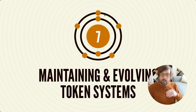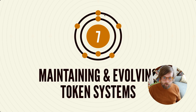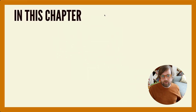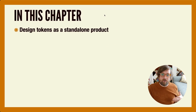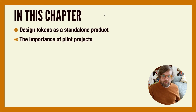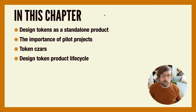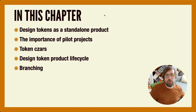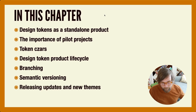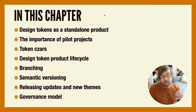Chapter seven is about maintaining and evolving token systems — really the human stuff around a token system. We'll talk about how design tokens are a standalone product distinct from a component library, the importance of building a token system through real pilot projects, and token czars — the keepers, owners, and maintainers of a token system. We'll also cover the token product lifecycle from MVP through V1 and beyond, branching, semantic versioning, releasing updates, new themes, changes, deprecations, and a governance model for making it all hang together.